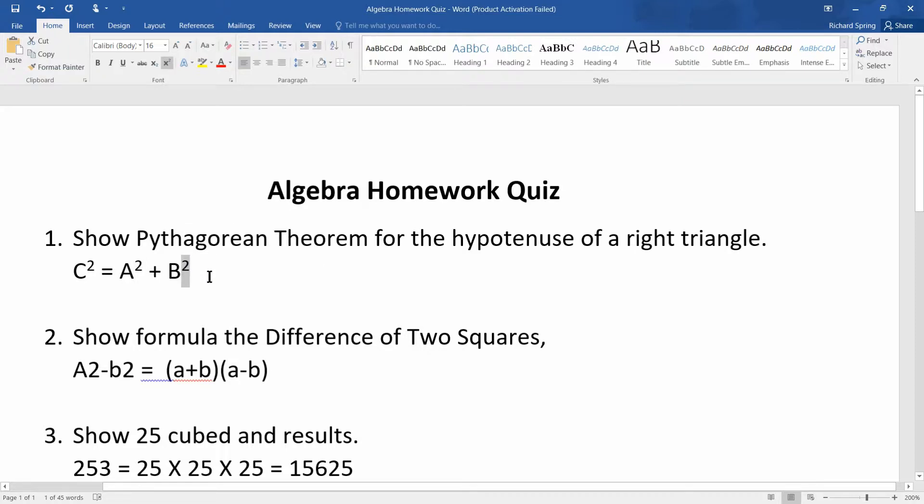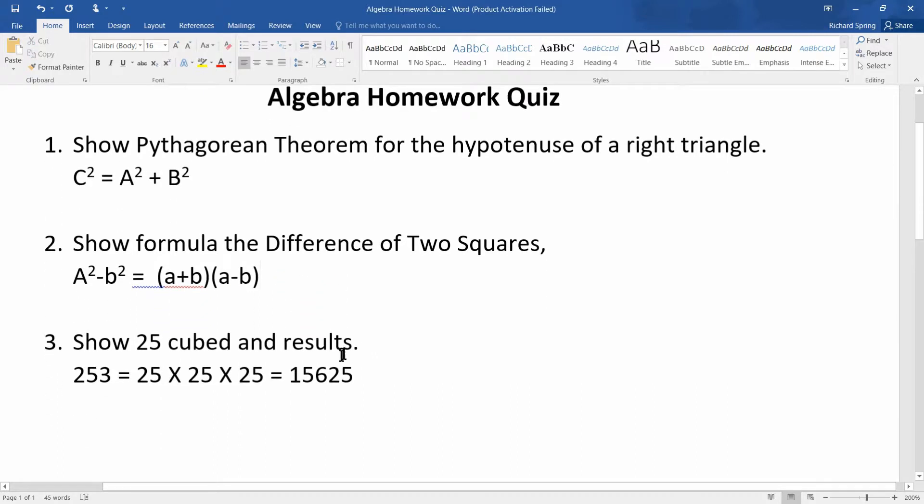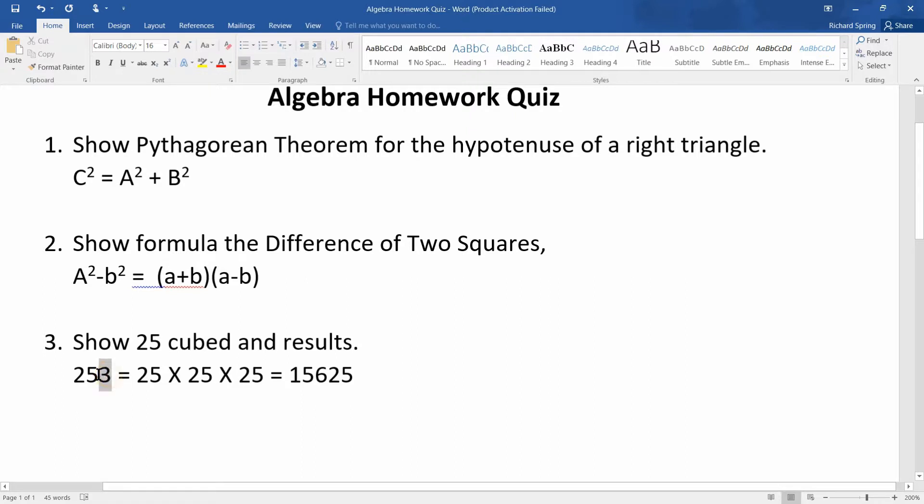Two under the B, Control Shift equals. Continuing to the second problem, select the two on A, make it A squared. The two on B, make it B squared. And then finally, let's go down to the third one. Show 25 cubed and the results. It is not 253, it's 25 cubed. So we make a superscript that is mathematically correct. Now this should get 100 on the math test.